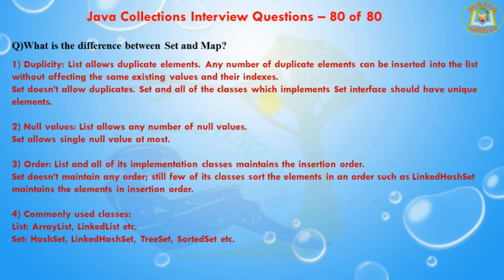The next question is what is the difference between Set and Map? Set contains values only whereas Map contains both key and value. List allows duplicate elements — any number of duplicate elements can be inserted into the list without affecting existing values and their indexes. Set doesn't allow duplicates; all classes implementing the Set interface should have unique elements. Map contains key-value pair format.